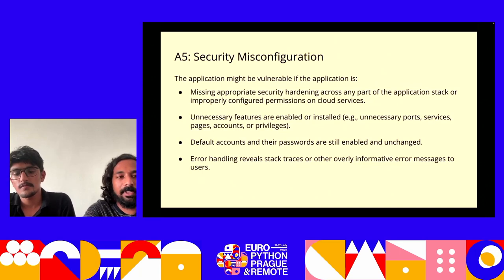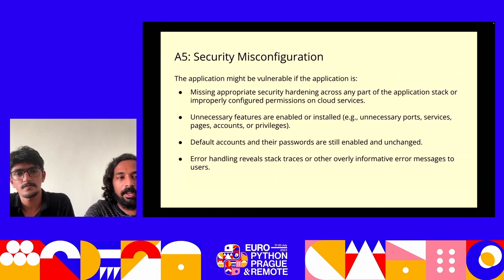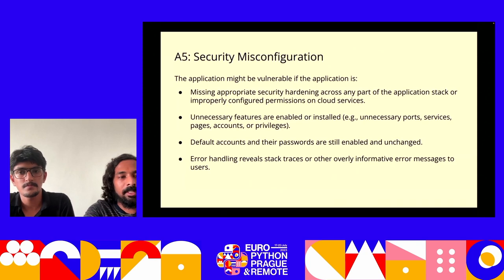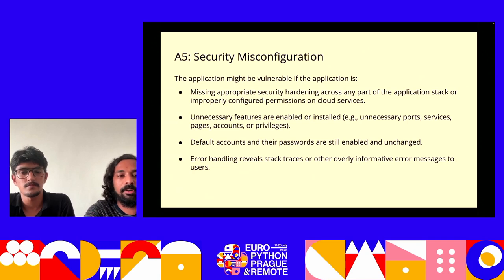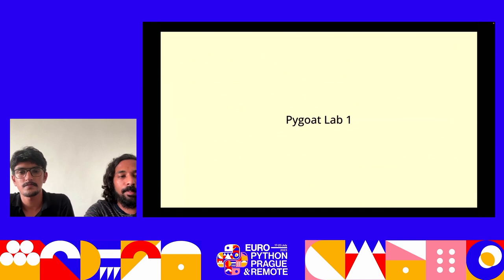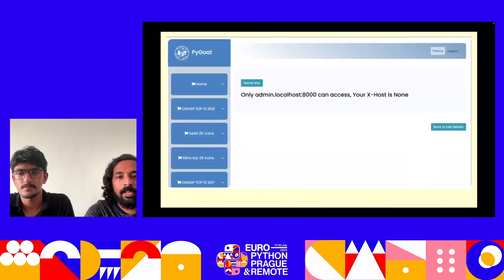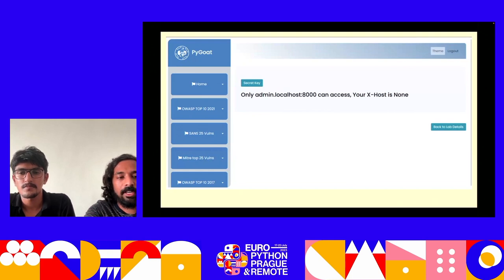Ranking fifth is security misconfiguration. An application might be vulnerable if it's missing security hardening — for example, improperly configured permissions to access cloud resources, exposed open ports or pages without checks, default credentials left unchanged in production environments, or improper error handling that reveals stack traces or sensitive info to the end user. In the PyGoat lab, a message states 'only admin localhost:8000 can access' and 'your X-Host is not.' This suggests the application is authorizing access based on an HTTP request header value.